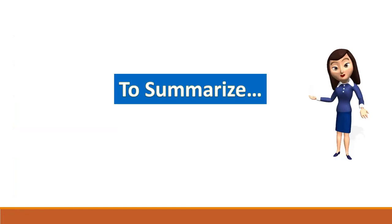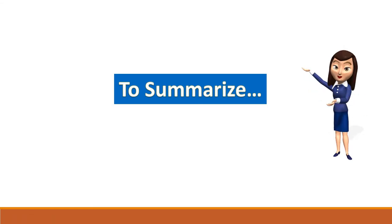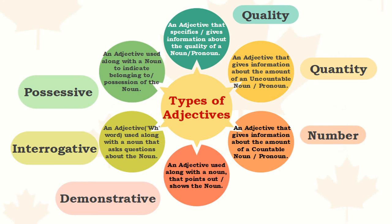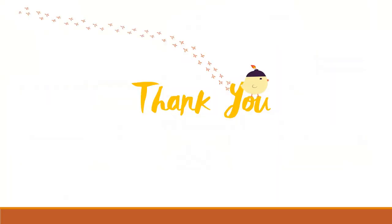Now to summarize, if you look at this mind map or chart, there are six types of adjectives with a summarized description of each type. Thank you very much for your attention. I'll see you next time.